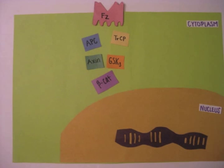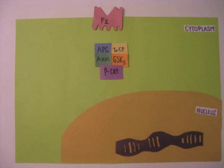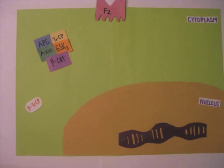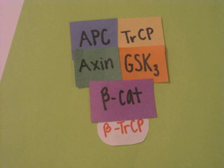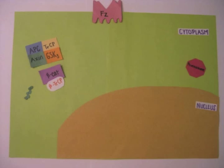Wnt does not bind to frizzled, disheveled is not activated, and the destruction complex is not shut down. This allows beta-TRCP and ubiquitin peptides to bind to beta-catenin and direct it to proteasomal degradation.